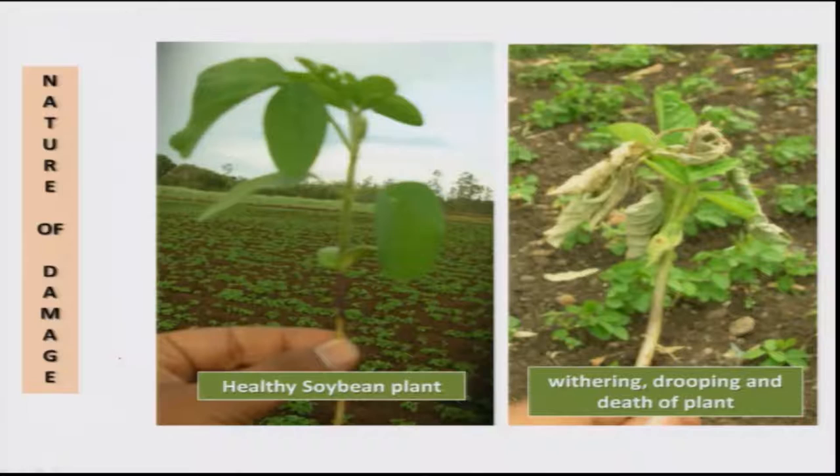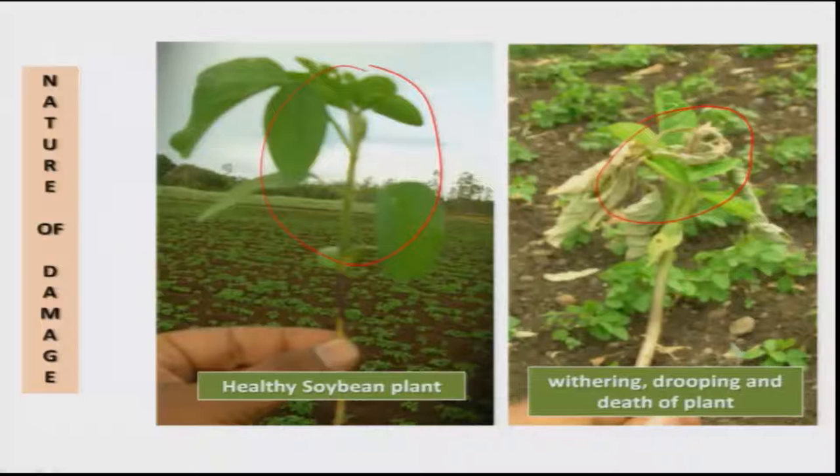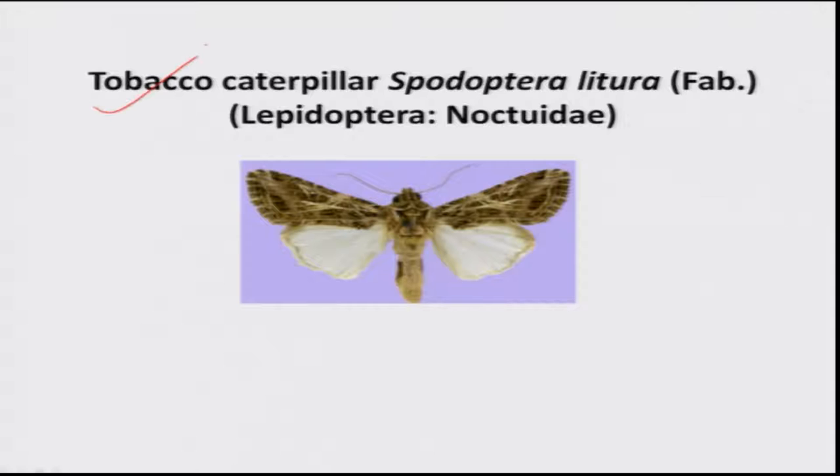Under field conditions, a healthy plant looks normal, whereas the stem fly-infected plant shows wilting and total death of the plant is normally seen.